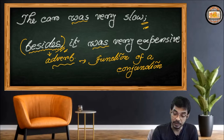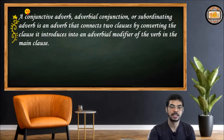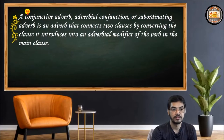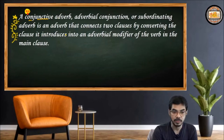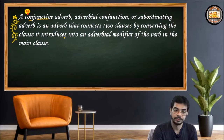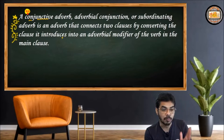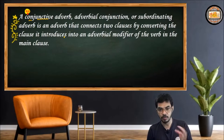What do we call it? We call it a conjunctive adverb. Have you heard this term before? We call it a conjunctive adverb, adverbial conjunction, and also subordinating adverb. You can pause the video and write down the definition. A subordinating adverb is an adverb whose function is to connect two clauses.